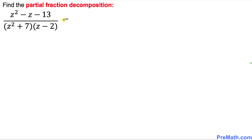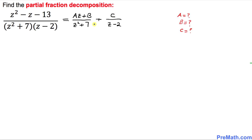This rational expression can be written as follows. Since this part is z squared plus 7 — a quadratic — I am going to write down az plus b over that. And since the linear part is z minus 2, I am going to write c over that. Our task is to find the values of a, b, and c.